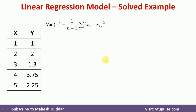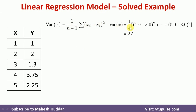Similarly, we find the variance of x, which equals 1 divided by (n minus 1) times the summation of (x_i minus mean of x) squared. The variance of x equals 1 divided by 4, times: (1 minus 3) squared, plus (2 minus 3) squared, plus (4 minus 3) squared, plus (5 minus 3) squared. The value of variance is equivalent to 2.5.